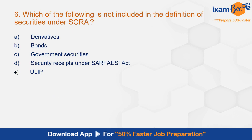Question number 6: Which of the following is not included in the definition of securities under SCRA? The correct answer is ULIP — unit linked insurance policy — which is option E. This is as per the definition of securities under SCRA.